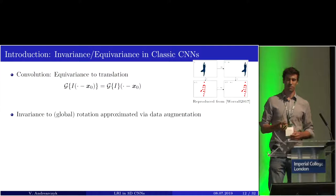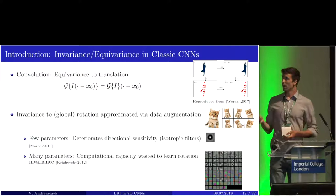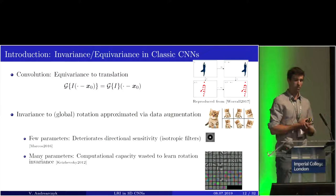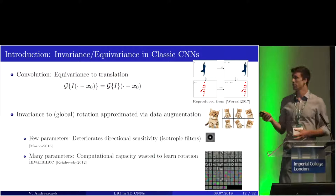Taking a step back, let's talk about invariances in classic convolutional networks — not necessarily local invariances. Translation equivariance is built into the convolution operation: if we translate the input image, the response is translated too. Invariance to global rotation is generally approximated via data augmentation, where we input multiple rotated versions of training images. The problem is that with few parameters, forcing this invariance will deteriorate directional sensitivity, and the only way to learn it would be to learn isotropic filters. With many parameters, we can learn some invariance, but there is computational waste and a need for a lot of training data.